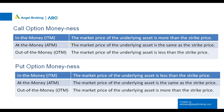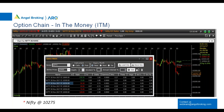I hope you are all clear on intrinsic value and time value. To clarify: in the money for a call option means the market price is more than the strike price; at the money means the same as the strike price; out of money means the market price is less than the strike price. It is just the opposite for put options.